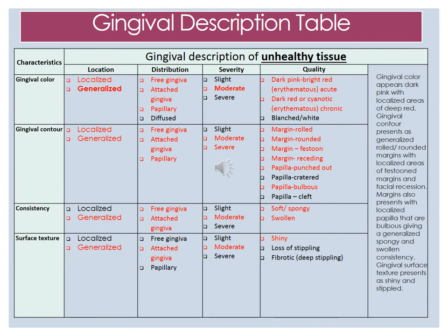The gingival description for Kim includes both generalized and localized findings. As far as distribution, the free gingiva, attached gingiva, and papillary are affected. The severity is moderate, and the quality of the gingival color is dark pink to bright red, with dark red being cyanotic. The dark red is more of a localized area. As far as gingival contour, we have both generalized and localized areas, with the free gingiva, attached gingiva, and papillary all affected.